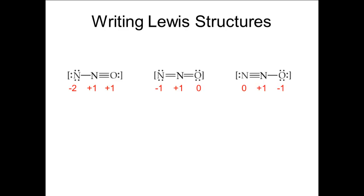So which is the best structure? All three structures follow the octet rule — rule A. We can eliminate the left structure because it has a formal charge of minus two on one atom, and the other structures do not. That's rule number two.